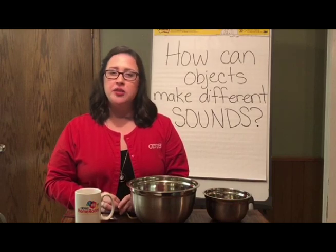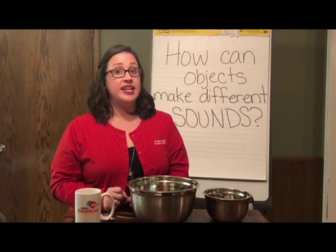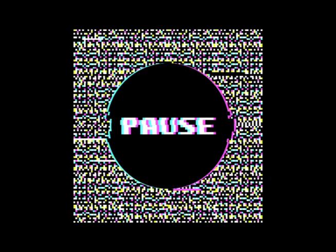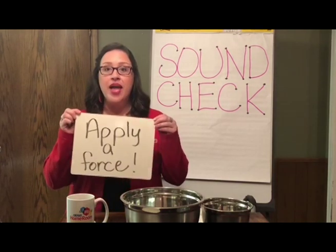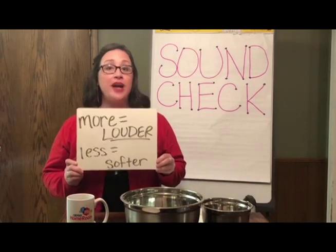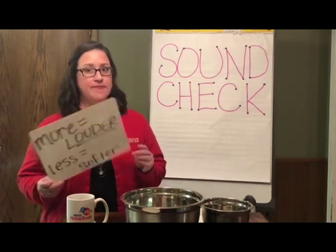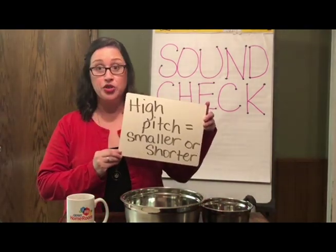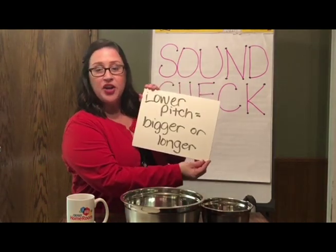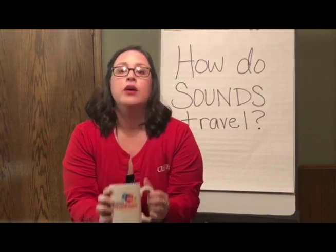Can you think of other ways to change the pitch of an object? Brainstorm your ideas, pause the video, and test it. Sound check! We made sounds by applying a force, and we can make louder or softer sounds by applying more or less force. Higher and lower pitch sounds can be made when we make objects smaller or shorter, or bigger or longer. When we made sounds with our kitchen objects, we applied a force, and we could feel them vibrate or move back and forth. The energy we used to apply the force was transferred to the object, then the object started to vibrate.